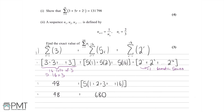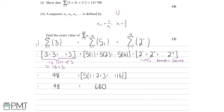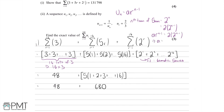We can use our general nth term of the geometric sequence: u_n equals a times r to the power of n minus 1, where a is the first term and r is the common ratio. The nth term of this sum is simply 2 to the power of n, which we can write as 2 times 2 to the power of n minus 1. Equating these forms, a times r to the n minus 1 equals 2 times 2 to the n minus 1, so a equals 2 and r equals 2.